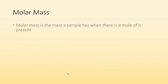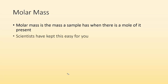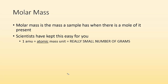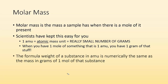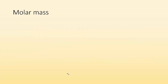So molar mass — let's talk about that. Molar mass is the mass a sample has when there's a mole of it present. Scientists have kept this easy for you. One atomic mass unit is a really small number of grams because you're talking about atoms. But when you have one mole of something that is one AMU, then you have one gram of that stuff. So basically, a mole of AMU is a gram. The formula weight in AMU is numerically the same as the mass in grams of one mole of that substance.